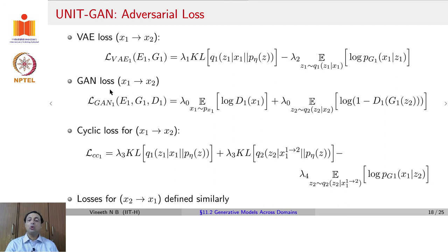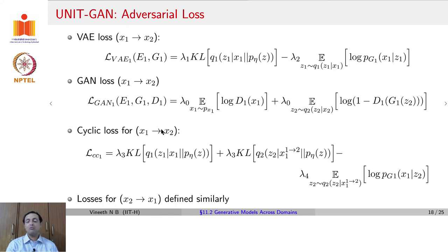In addition to these losses, there is also a cyclic loss for X1 to X2: a KL divergence between Q1(Z1|X1) and the prior, Q2(Z2|X1→2) and the prior, along with the negative log-likelihood of G1 generating X1 given Z2. This is the cyclic loss from X1 to X2, and one would similarly define the X2 to X1 cyclic loss. All of these can be understood as extensions of GANs and VAEs to ensure generation across domains.